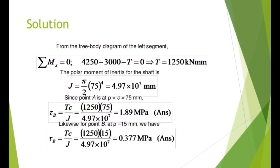Solution: from the free body diagram of the left segment, summation of M_x equals zero. So 4250 minus 3000 minus T equals zero. Therefore T equals 1250 kN·m. The polar moment of inertia for the shaft is j = (pi/2) * 75^4 = 4.97 × 10^7 mm^4.